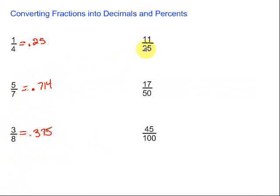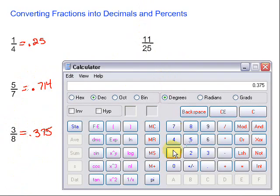Okay, how about this one? Eleven over twenty-five. Again, we just divide. Eleven divided by twenty-five gives us .44.